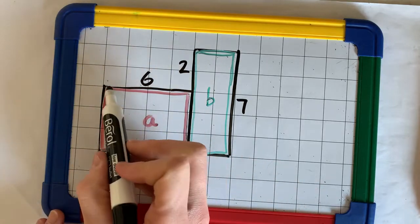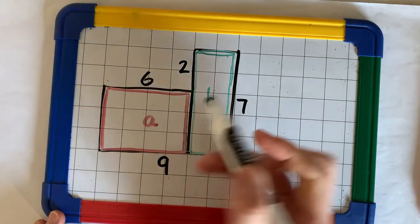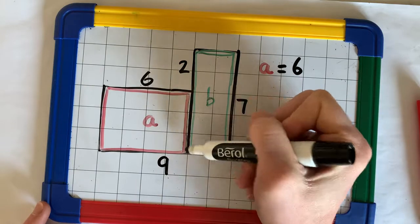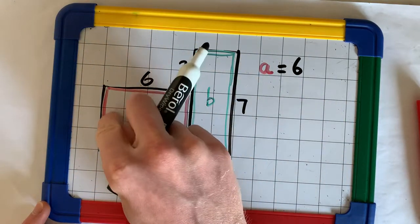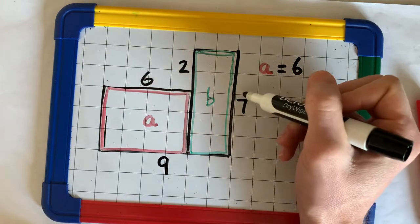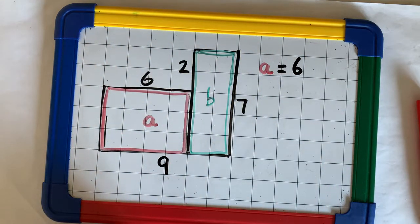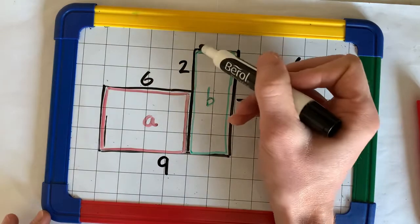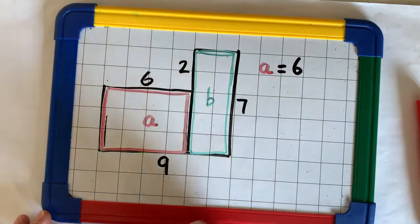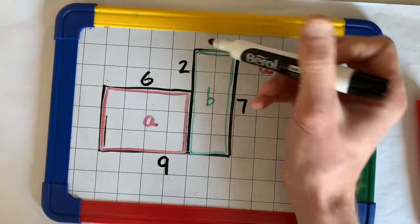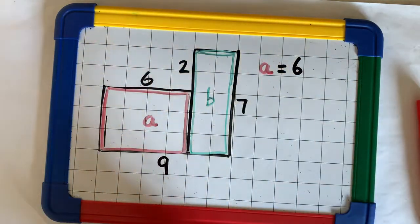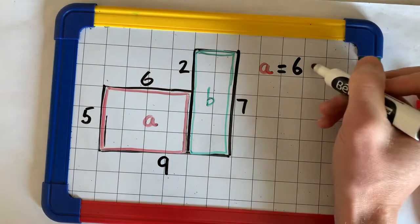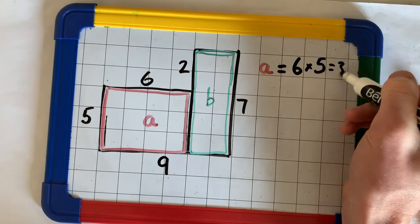Now, you'll see that we've got a width for A. So, when we're looking to find out A, we know we're going to do 6, but we don't have a length. Now, we can work that out using the two other lengths, 7 and 2. If this whole length is 7, and this little bit here is 2, we know that 2 add this length must make 7. So, it's 2 add 5. So, A is 6 times 5, which makes 30.